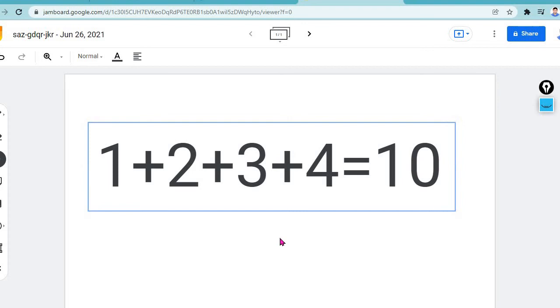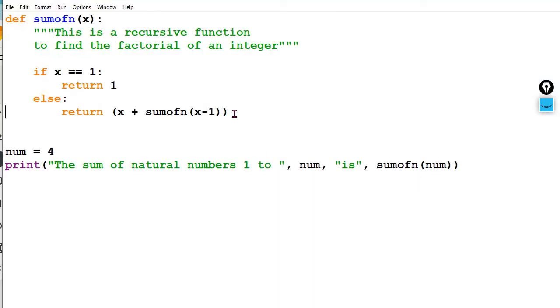But now we have to develop a program and run the program on Python and we need to get the result 10. This is Python IDE where we have finished typing of the same code. And now we are going to run. The value of num is 4. Now I am going to run the program, click to the run, run module.